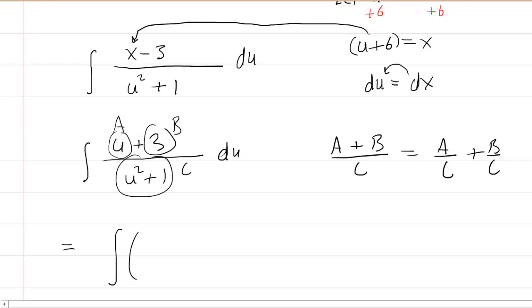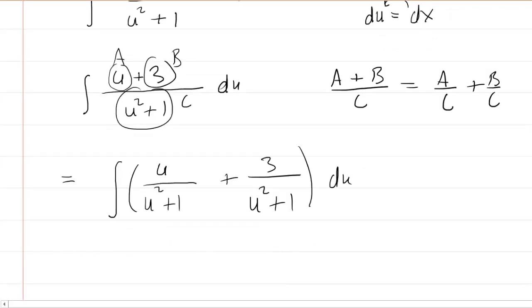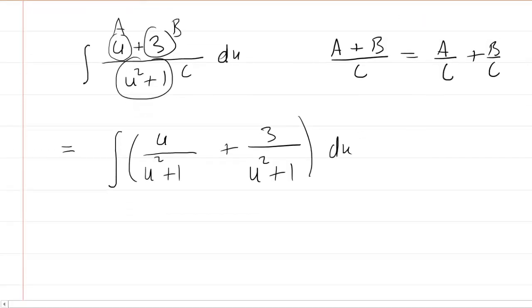So following that little rhythm there, you'd have u over u squared plus one plus three over u squared plus one with respect to u. Now each of these integrals needs to be evaluated separately.